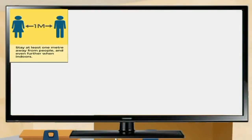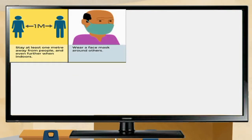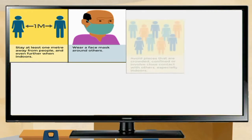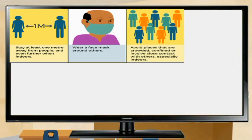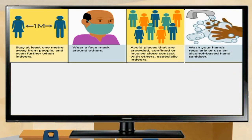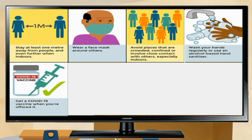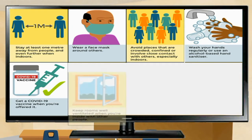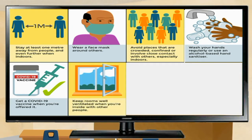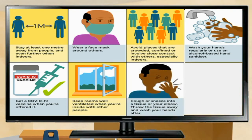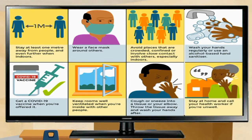Stay at least one meter away from people, and even further when indoors. Wear a face mask around others. Avoid places that are crowded, confined, or involve close contact with others, especially indoors. Wash your hands regularly or use an alcohol-based hand sanitizer. Get a COVID-19 vaccine when you are offered it. Keep rooms well-ventilated when inside with other people. Cough or sneeze into a tissue or your elbow. Throw the tissue away and wash your hands after. Stay at home and call your health worker if you are unwell.